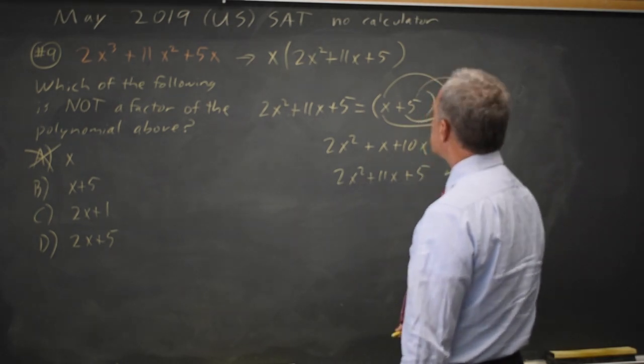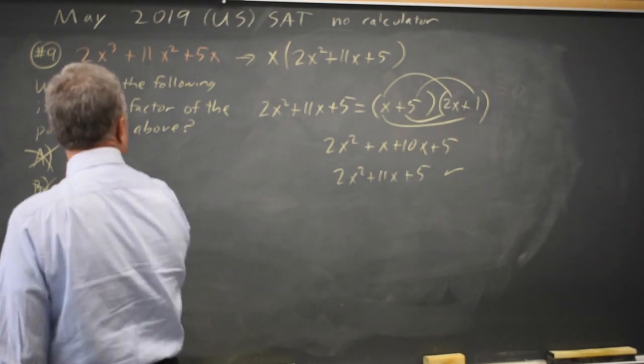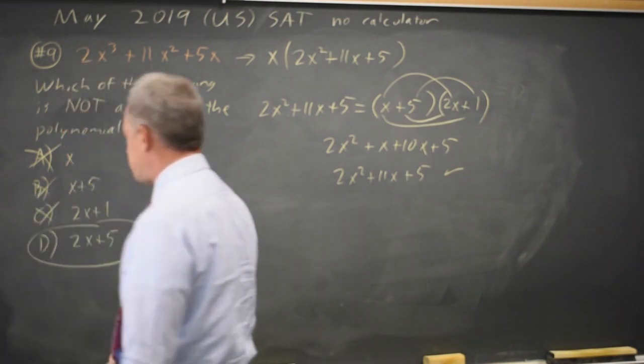So my factors include x, x plus 5, 2x plus 1, but not 2x plus 5.